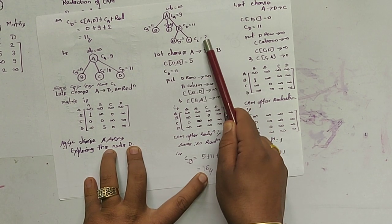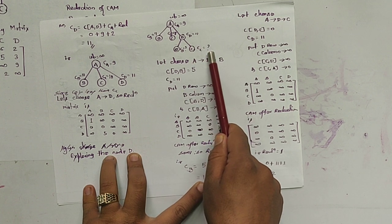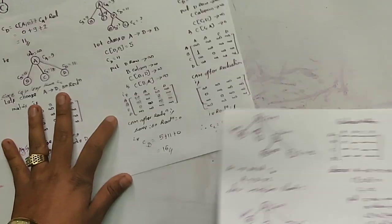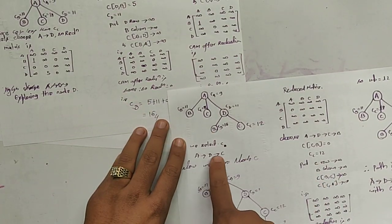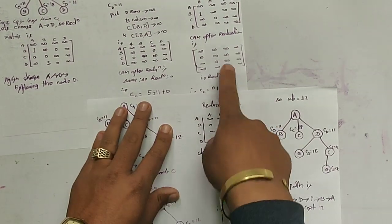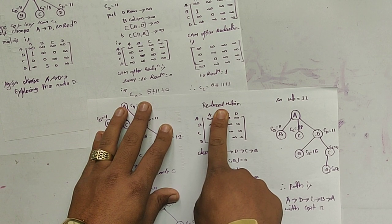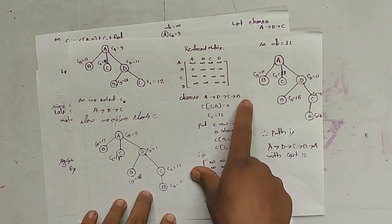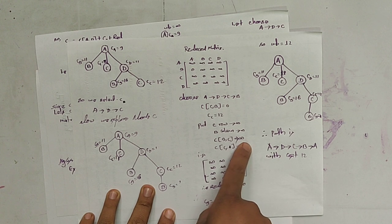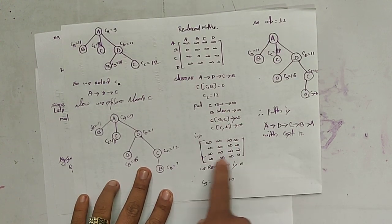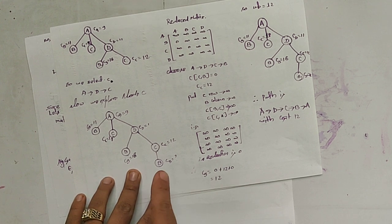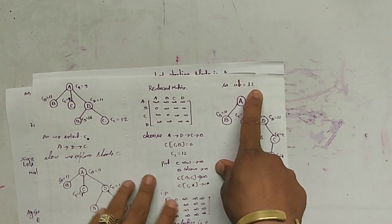Since cost of D→B is 16 and cost of D→C is 12, we choose the least value: D to C is selected. Exploring node C, the only remaining node is B. From this matrix, C to B is 0 and cost of C node is 12. After substituting infinities and performing reduction, the reduction is 0. So the total tour cost is 0 + 12 + 0 = 12.